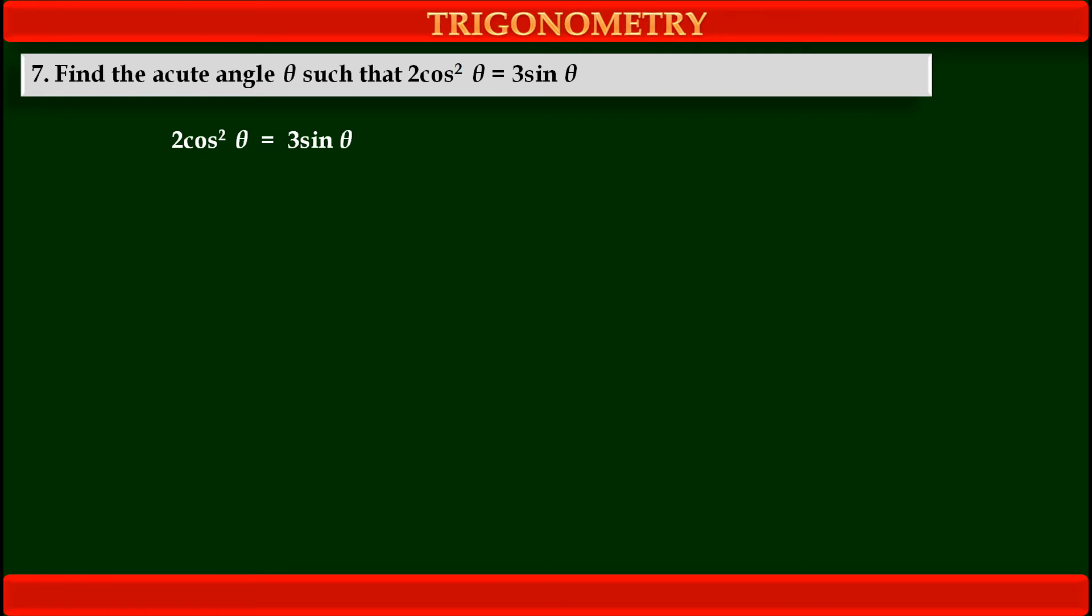So first we have to convert them in single variable equation. And we know identity for sin²θ and cos²θ. So by using this identity, sin²θ + cos²θ = 1, we can change our first term cos²θ.